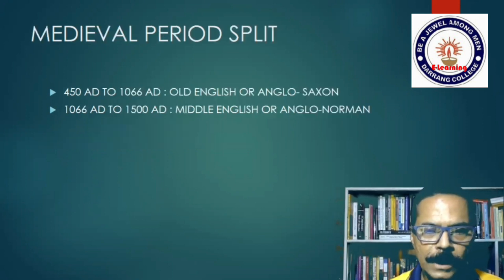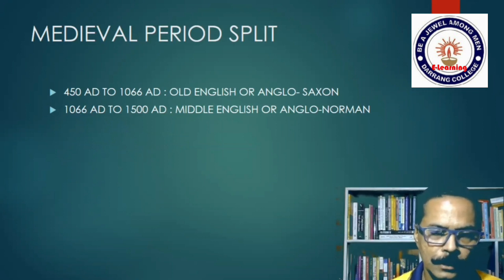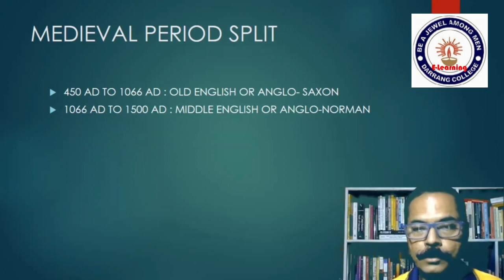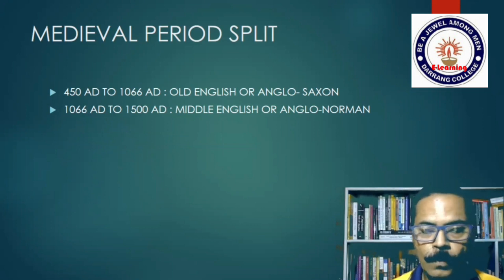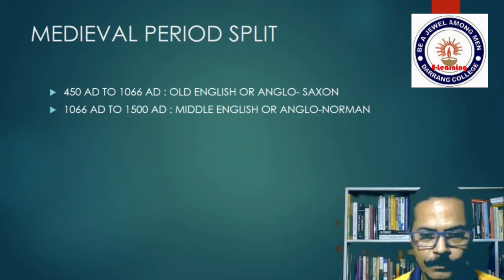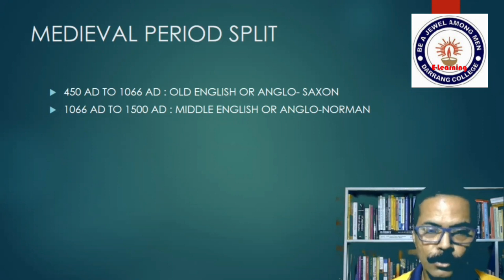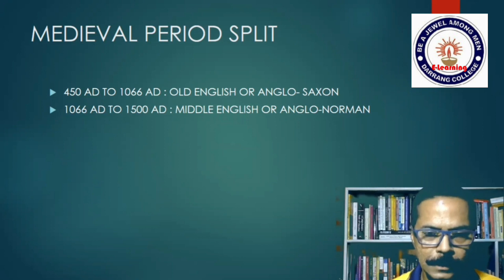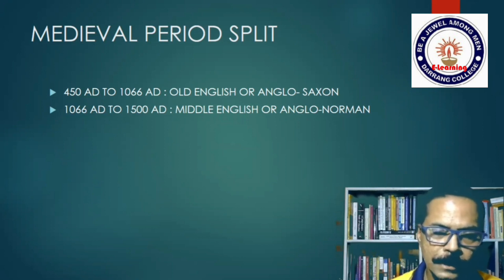The medieval period from 450 to 1500 has been split into two parts. From 450 to 1066 is called the Old English or Anglo-Saxon period. 'Anglo-Saxon' comes from the Angles, Saxons, and Jutes — we still call the English people the Anglo-Saxons. Old English is the English language of that phase, and it is a Germanic language because its speakers — the Angles, Saxons, and Jutes — were of Germanic descent.